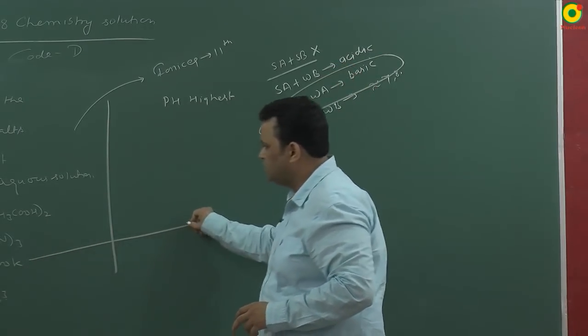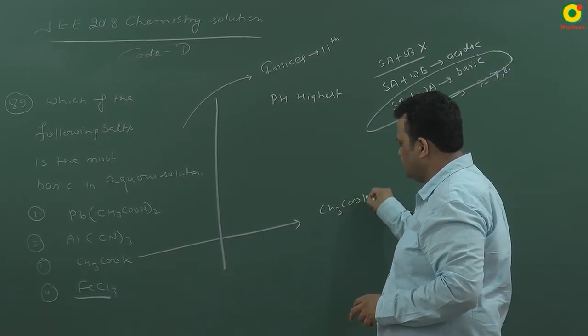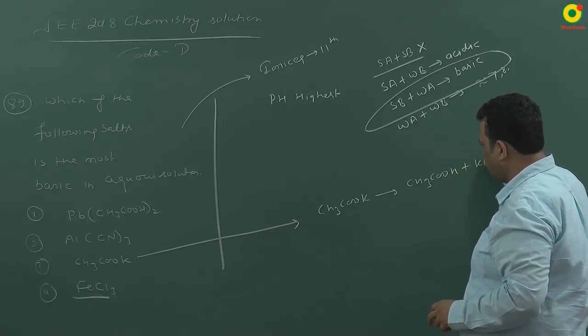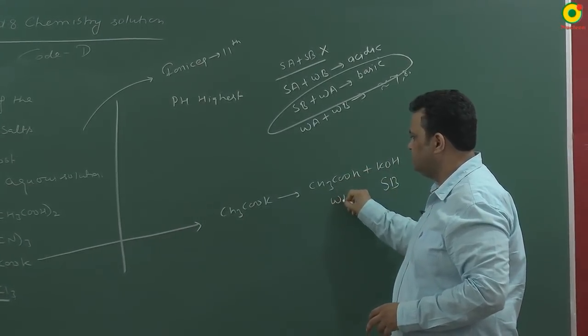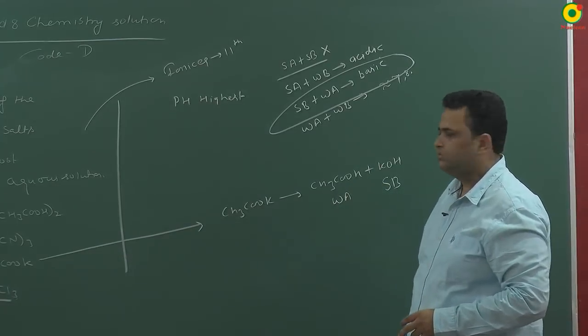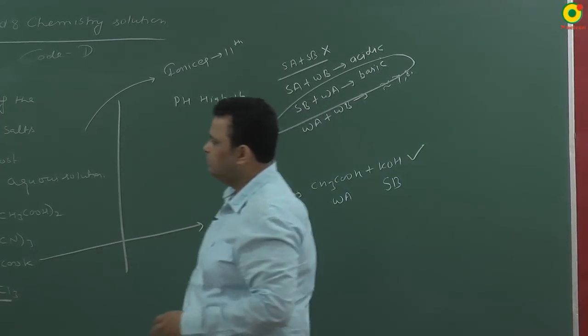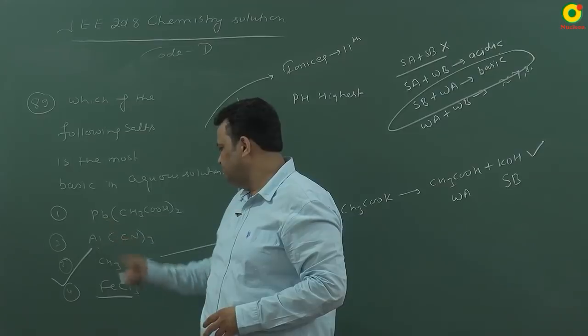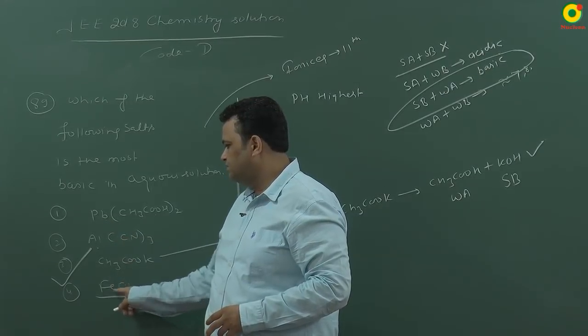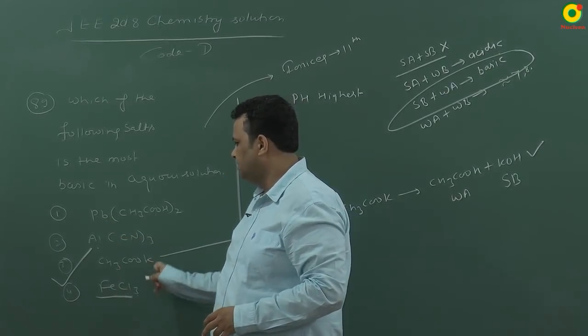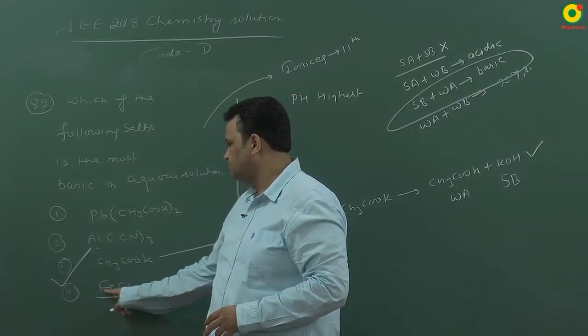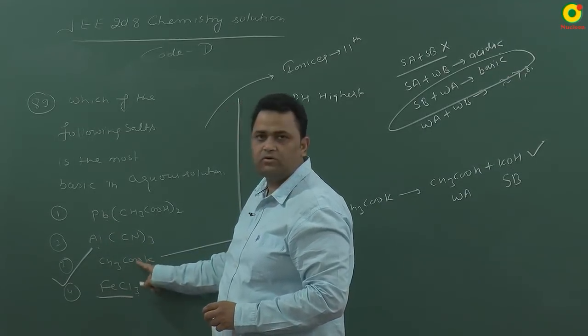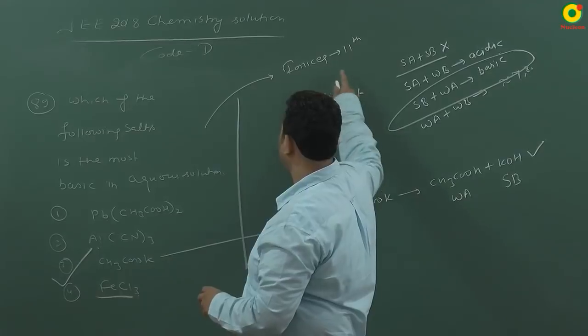This salt is CH3COOK. This is made of CH3COOH plus KOH, and KOH is a strong base while acetic acid is weak acid. Highest pH will be of third option. These are rejected: weak acid plus weak base. Only this salt is of strong base, that is why the pH will be highest.